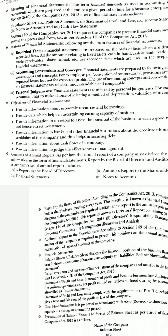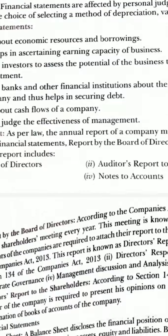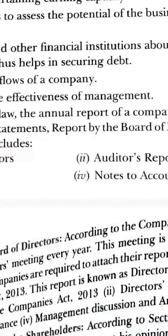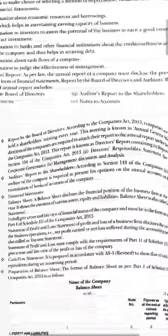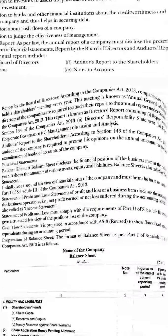The annual report also includes notes to accounts: accounting policies followed by the company, notes to accounts giving details of line items in the balance sheet and statement of profit and loss, explanatory notes explaining significant transactions and events, and additional information required to be disclosed in terms of Part 3 of Schedule 3 of the Companies Act 2013.